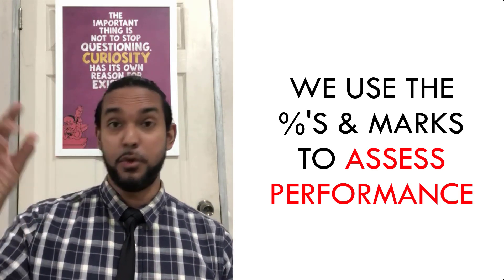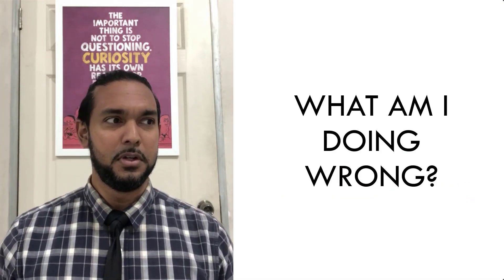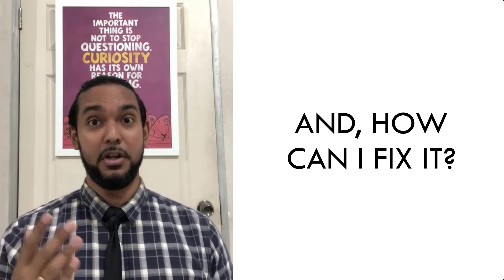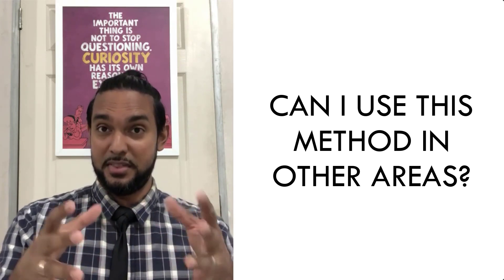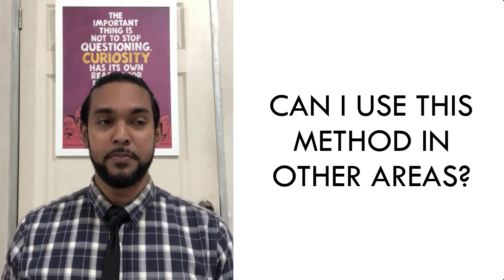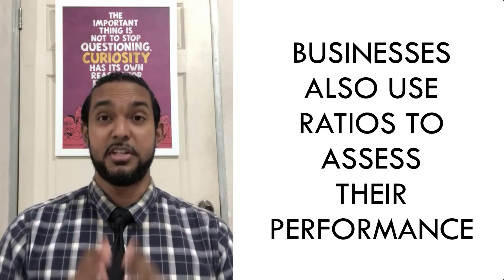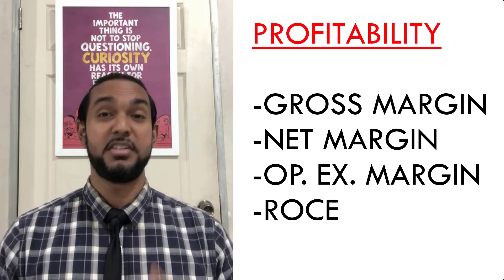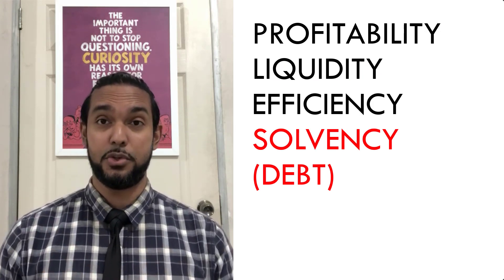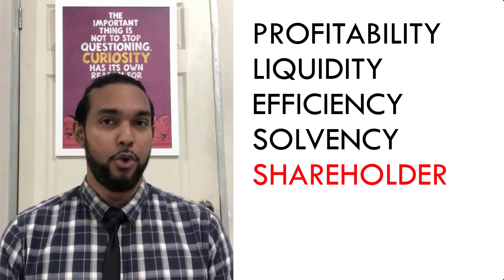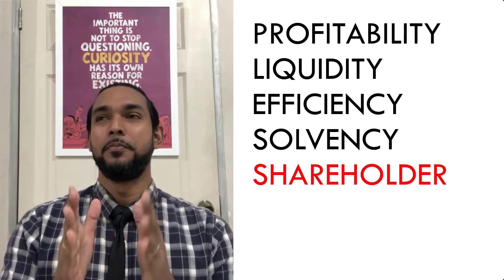The higher the ratio, the better the performance. We assess performance over time — if those ratios keep going down, you need to ask what you're doing wrong and how to fix it. Or if your marks are going up, what are you doing right and can you sustain it? Businesses do basically the same thing. They look at different areas: we discussed profitability in a previous video; in this video we're going to discuss liquidity. There are also efficiency, activity, solvency, debt, and shareholder ratios.